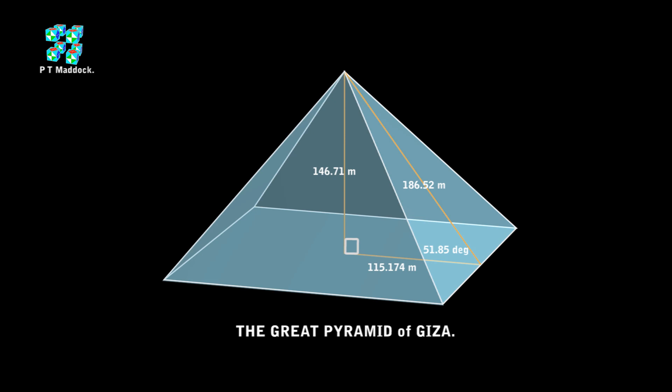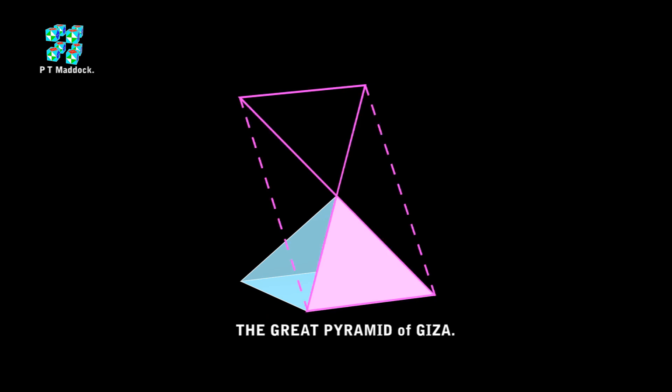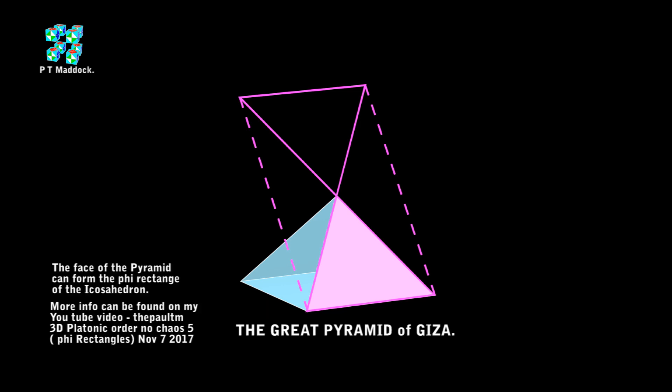Take a look at one of these faces. I'm going to turn the face to a color pink. Now look what I found — we can turn that triangle into a perfect five rectangle. If you want to learn more about the five rectangles, I made a video called 3D Platonic Order, No Chaos Five — five rectangles.